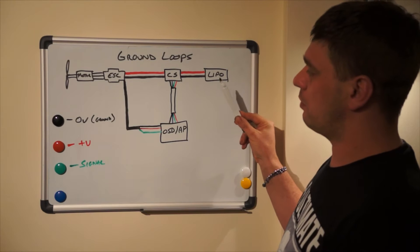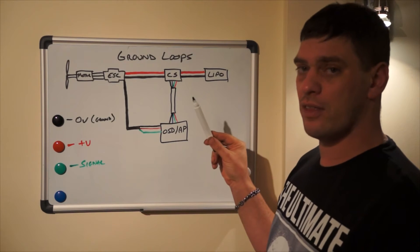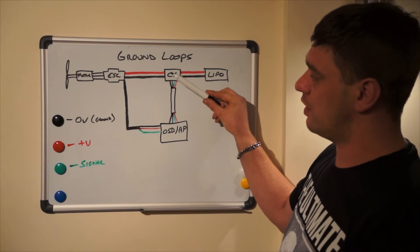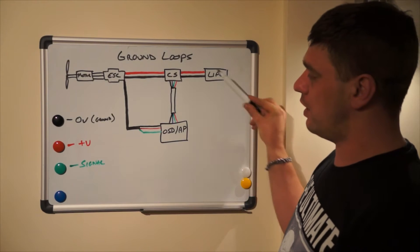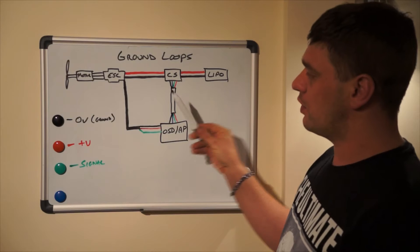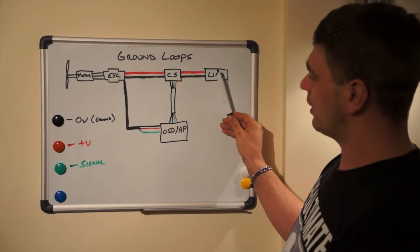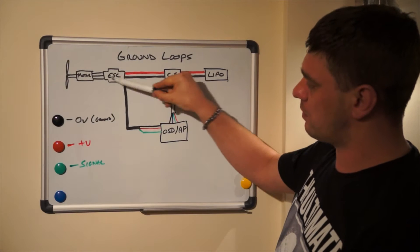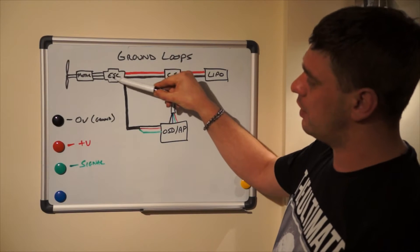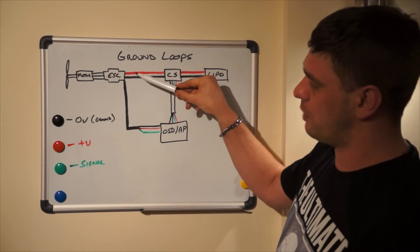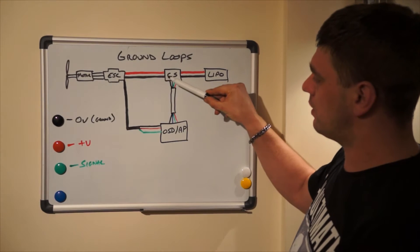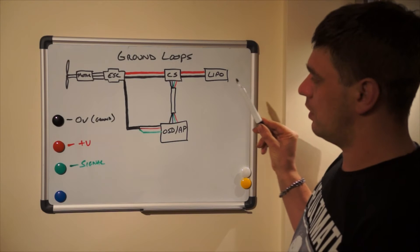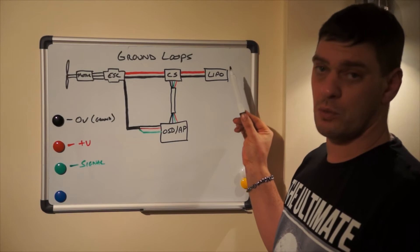So what is a ground loop? A ground loop is a path for the ground to pass in more than one direction. So normally when your motor's running, your positive runs down here into the ESC, the ESC distributes it with the timing, your motor spins around. It then returns down the negative wire and then into the LiPo. That's perfect, that's how it should work.